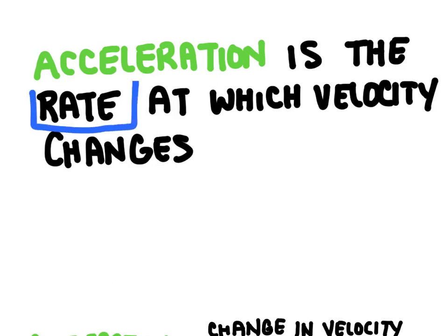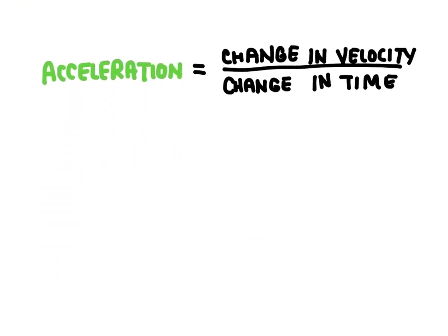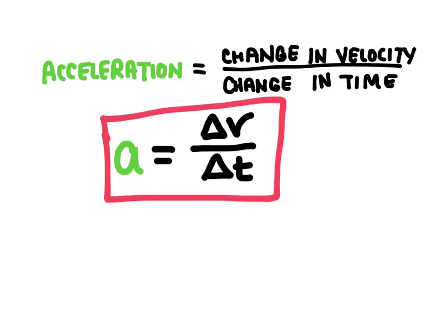This is where our time component comes in. Written as an equation, acceleration is equal to the change in velocity over the change in time. We use the letter A for acceleration and V for velocity. The delta symbol — that little triangle — means 'change in,' so we have delta V over delta T. This is the equation for acceleration.